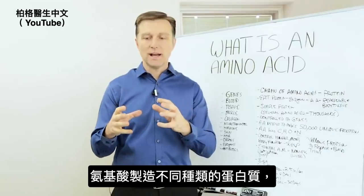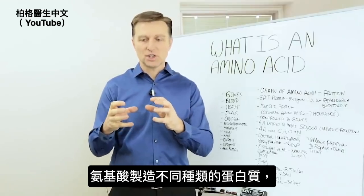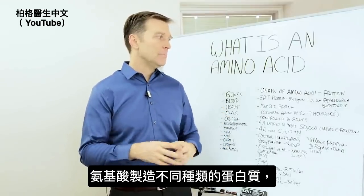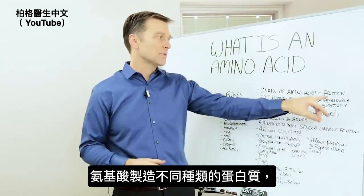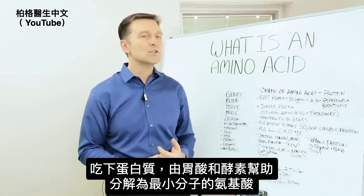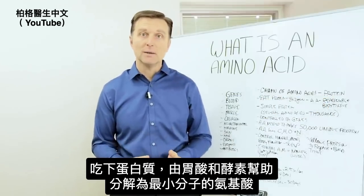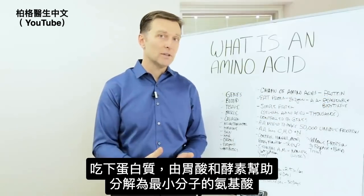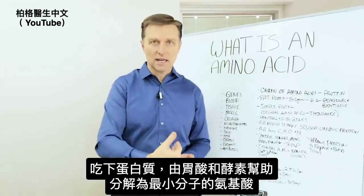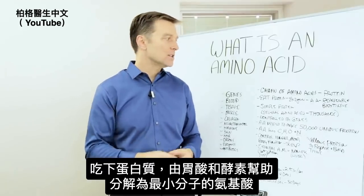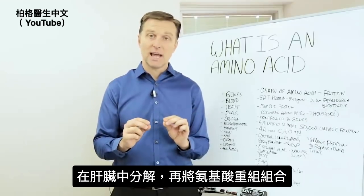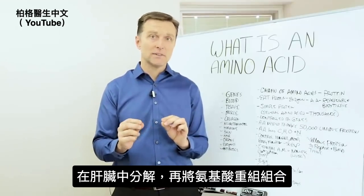When you have amino acids, you have a chain of them, it makes different types of protein. So when you consume protein, your body breaks it down with the help of acid and enzymes into the smallest particles of amino acids. And this happens mainly in the liver.